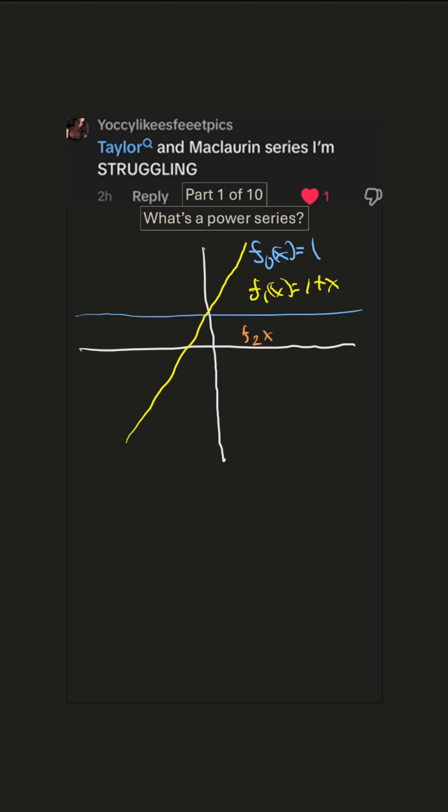That's the y equals x line shifted up by one. How about f sub two of x equals one plus x plus x squared? That's a little bit more complicated.